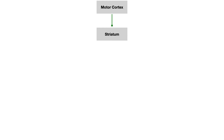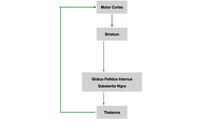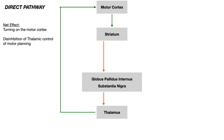The direct pathway starts with the motor cortex, which sends excitatory glutamate signals to the striatum — the caudate nucleus plus the putamen. The striatum then sends inhibitory GABA neurons to the globus pallidus internus and the substantia nigra. The substantia nigra and the globus pallidus internus then send inhibitory neurons to the thalamus, and the thalamus sends excitatory neurons back to the motor cortex. This entire loop is the direct pathway.